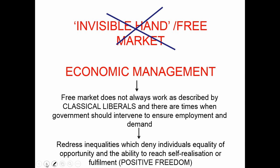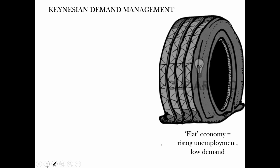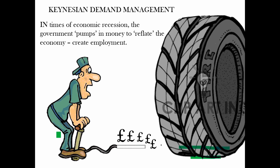Modern liberals defend this intervention on the same basis as they defend the enabling state and welfare state — it helps to redress inequalities, such as unemployment, which deny individuals equality of opportunity and the ability to reach self-realisation. The economist most closely associated with this type of economic management was John Maynard Keynes, and this style is known as Keynesianism. Keynes argued that when the economy was flat or in recession — characterised by rising unemployment and low demand — governments should intervene by pumping money into the economy to reflate it and create employment.